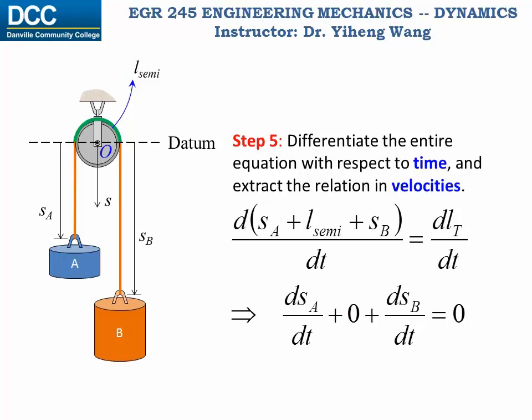By definition, the time derivative of position is the velocity. Therefore dSA/dt is simply the velocity VA, and dSB/dt is the velocity VB. Therefore this becomes VA plus VB equals to 0, or VA equals to negative VB.